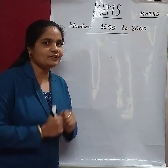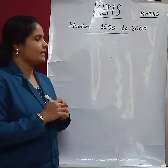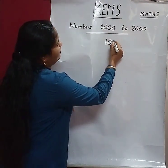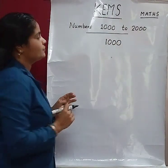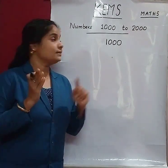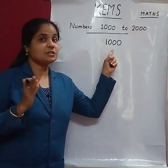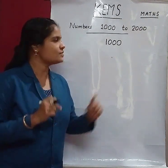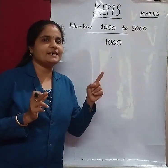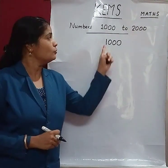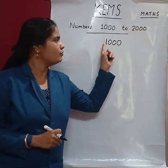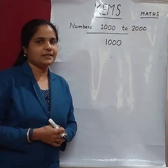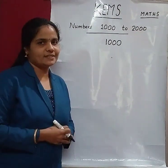Which is the first number? 1000. Children, listen. We learnt: which is the smallest 4-digit number? Yes, 1000. 1000 is the smallest 4-digit number — 1, 2, 3, 4 — a 4-digit number is 1000.